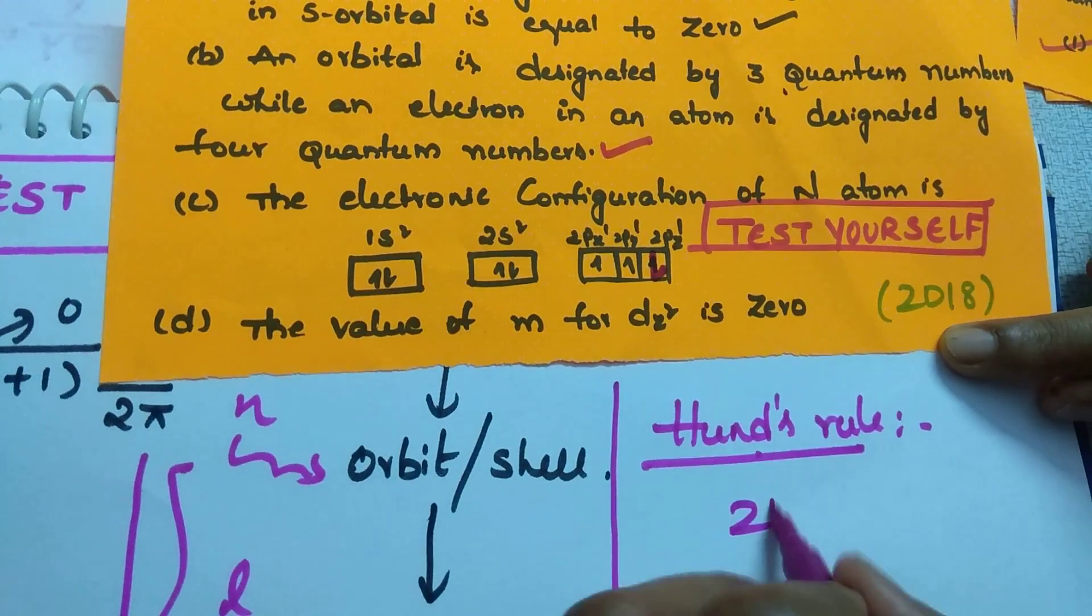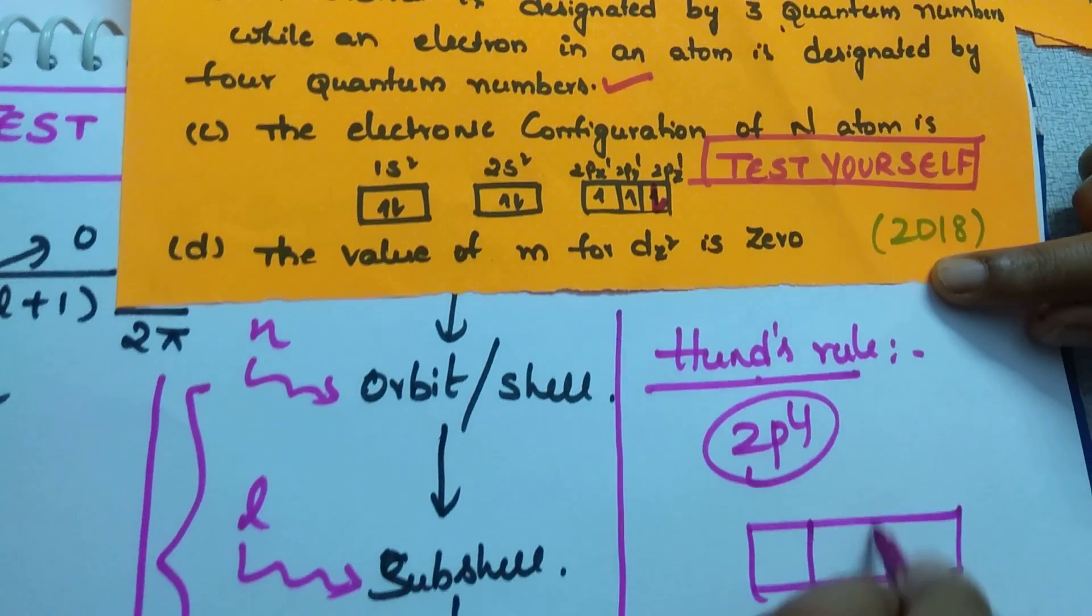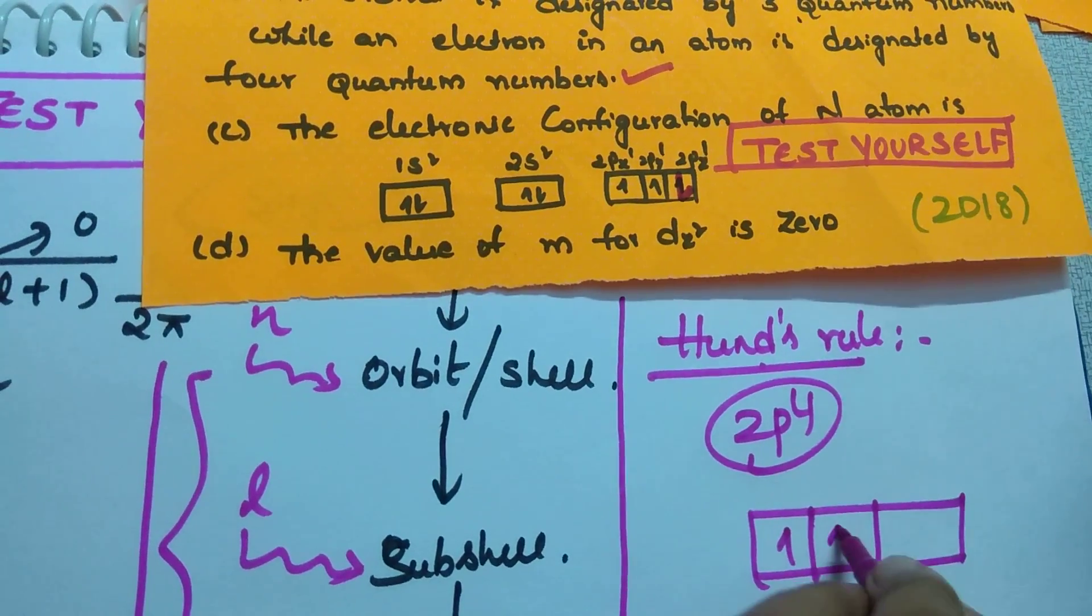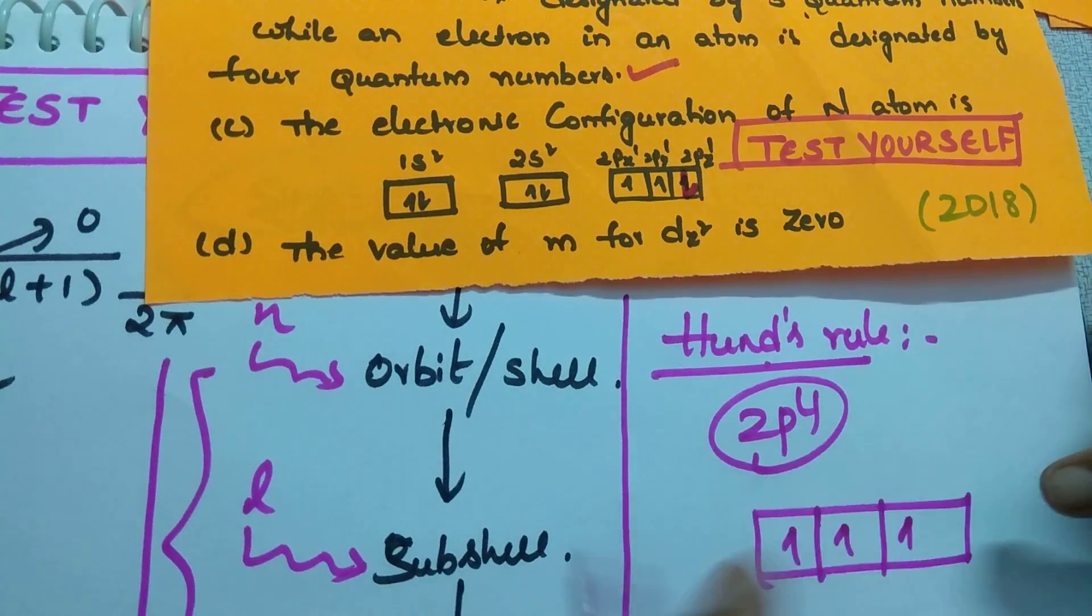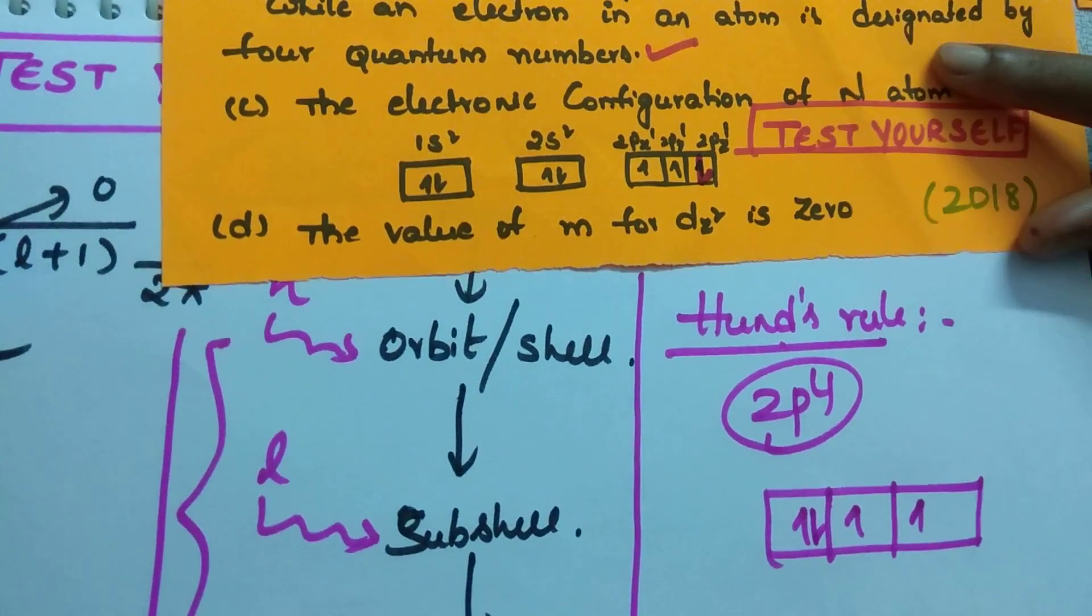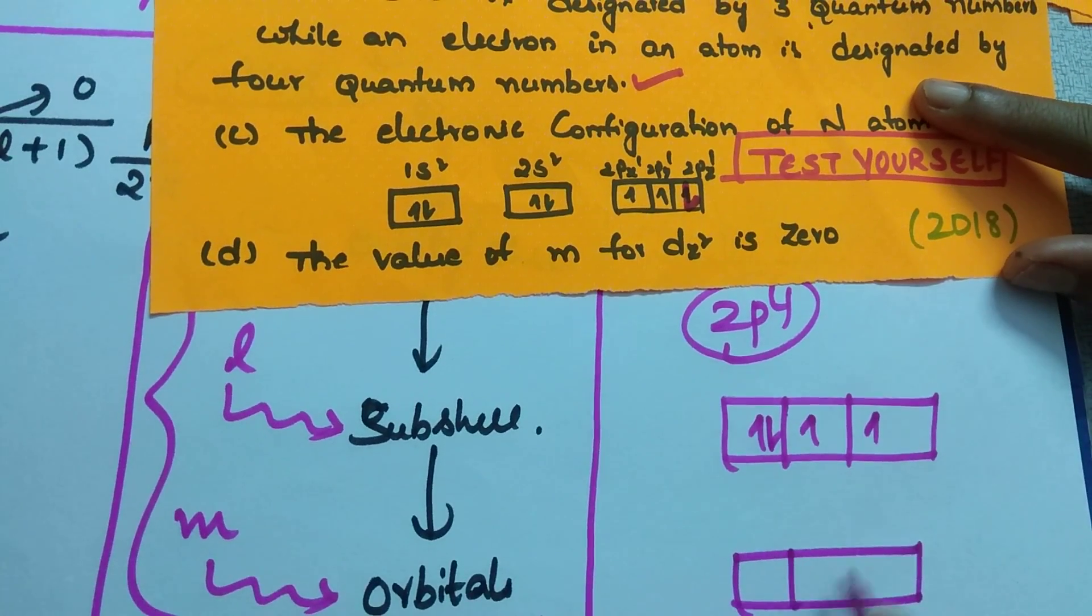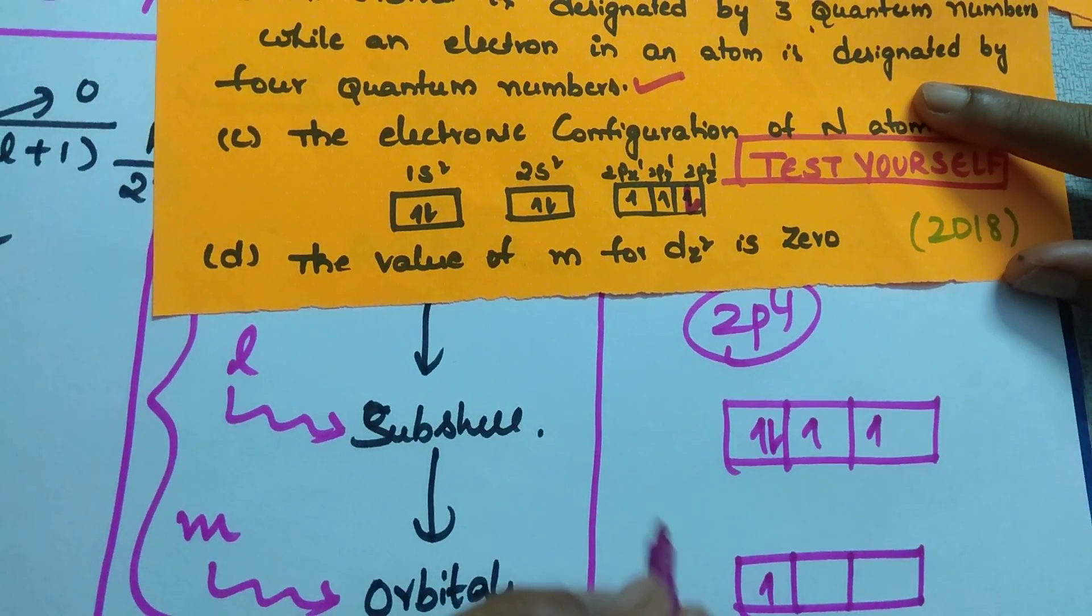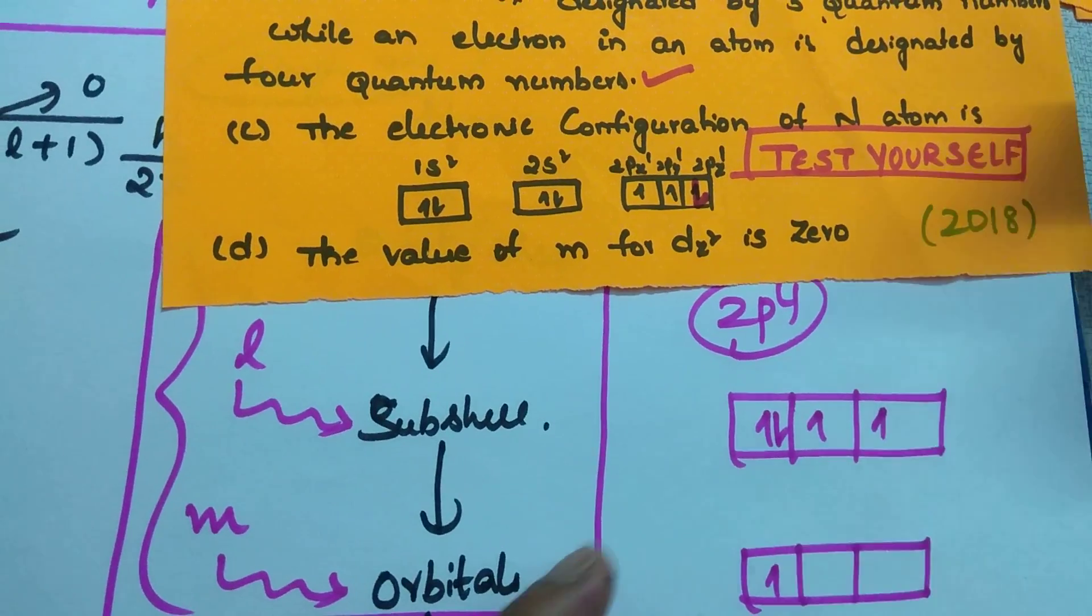For example, you want to fill 4 electrons in 2p. Then how you will fill? You fill that 1 electron in each orbital. After filling every orbital with 1 electron half fill, then again, you have to start pairing. Right? But, see for nitrogen, 3 is there. How you have to fill?